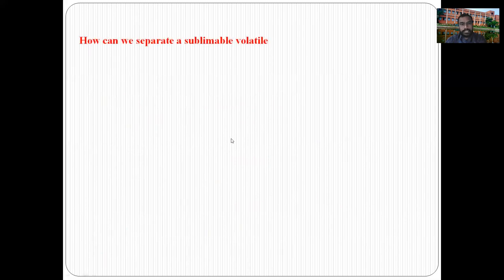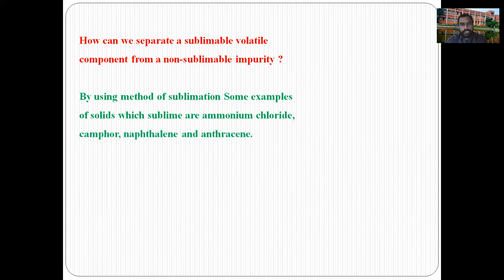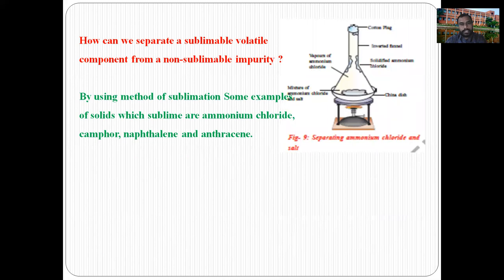How can we separate a sublimable volatile component from a non-sublimable impurity? By using the method of sublimation. Some examples of solids which sublime are ammonium chloride, camphor, naphthalene, and anthracene. Sublimation is a physical phase transition directly from the solid state into vapor state. So a mixture of ammonium chloride and sodium chloride — ammonium chloride being sublimable and sodium chloride non-sublimable — can be easily separated by sublimation.